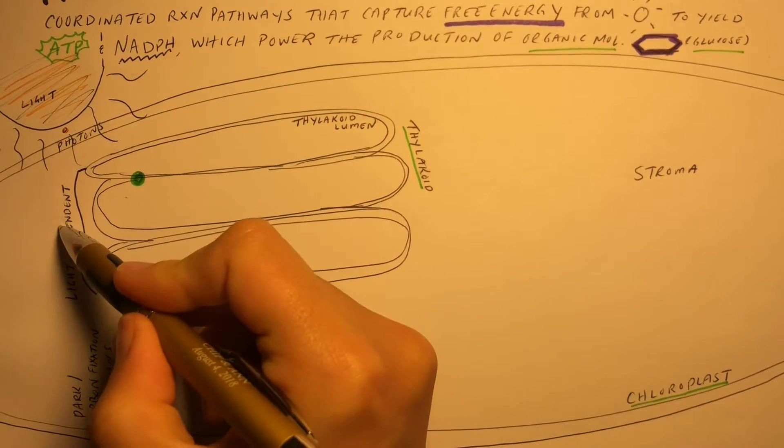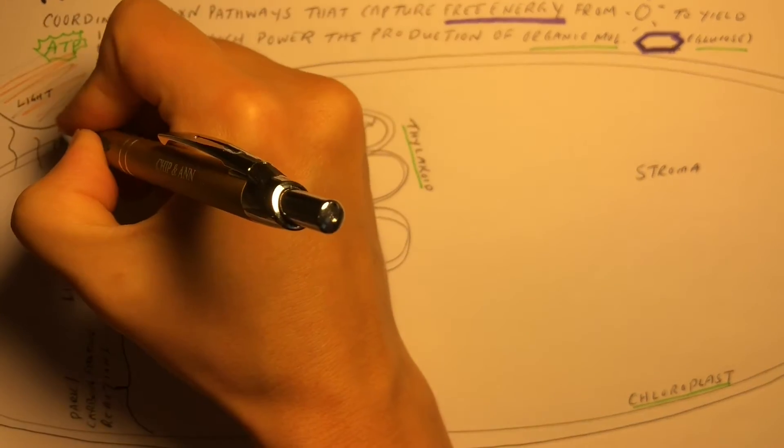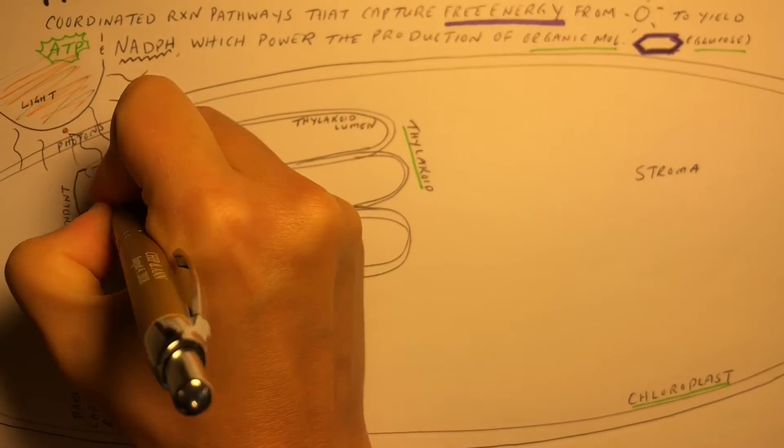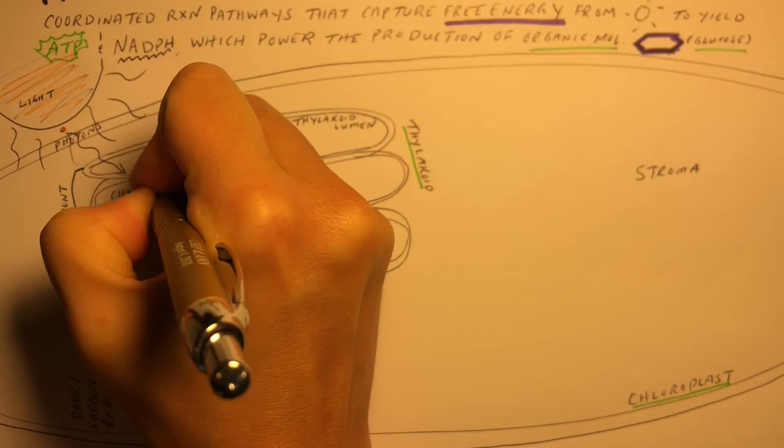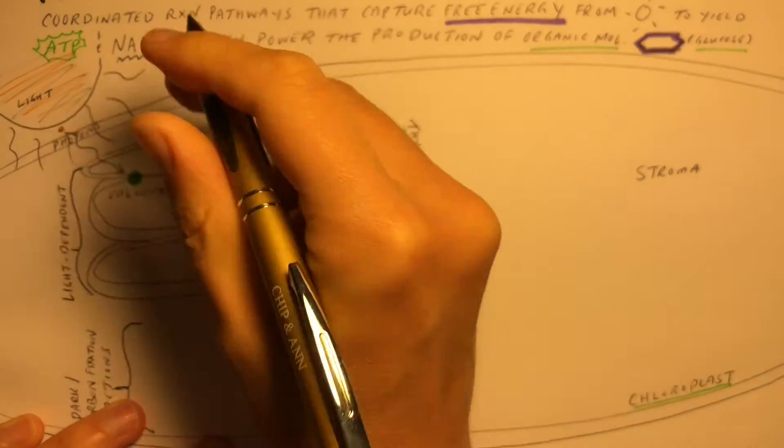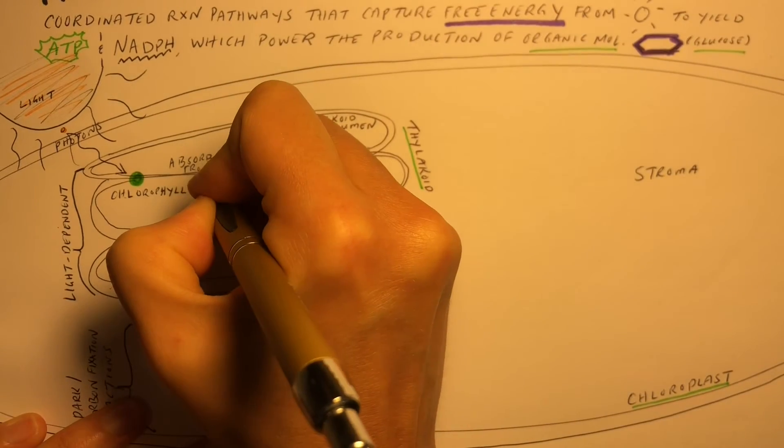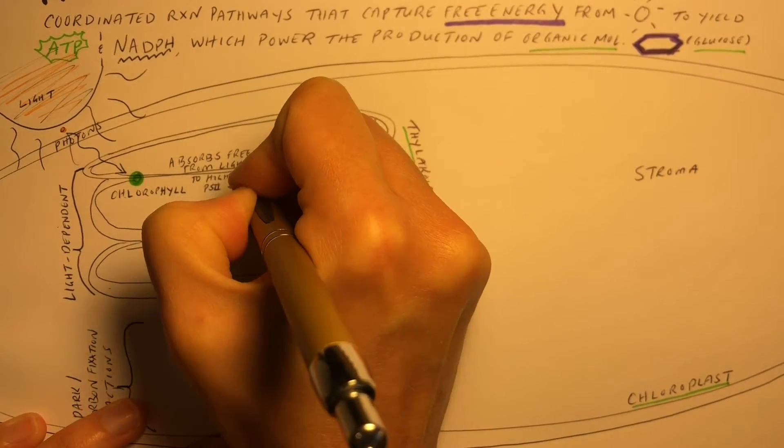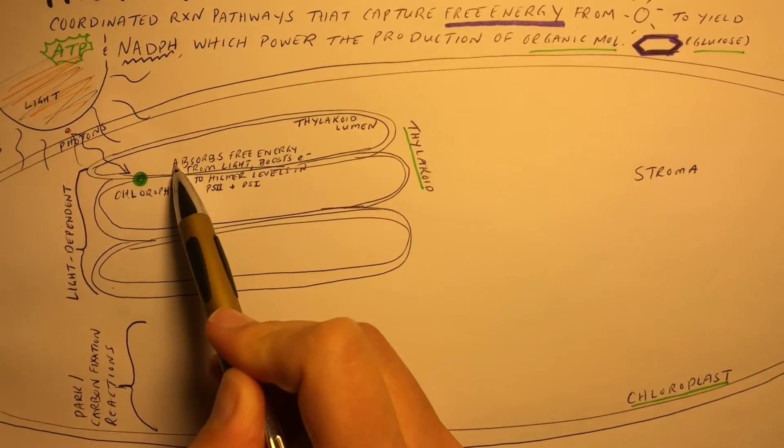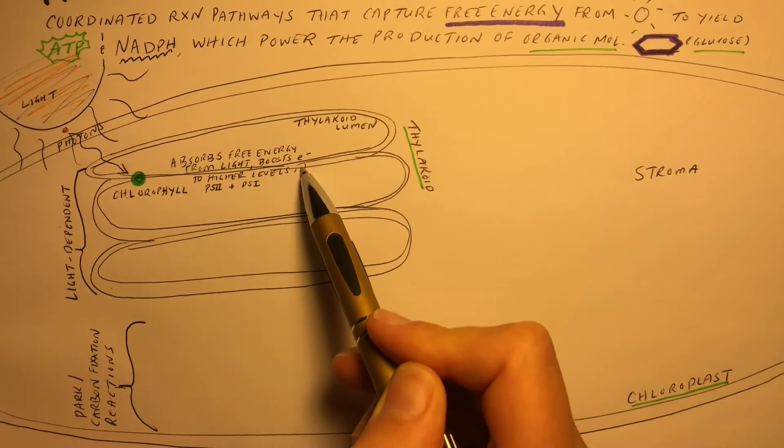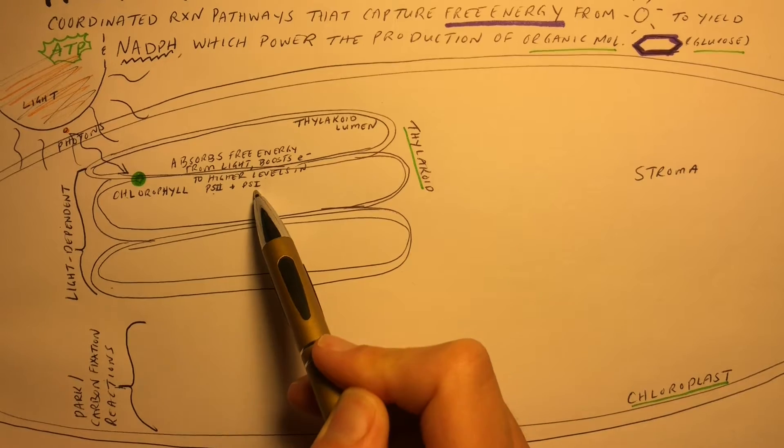Now during the light-dependent reactions, light, which travels as photons, is going to be absorbed in the chlorophyll. The chlorophyll are going to absorb the free energy from the light, which will later boost the electrons to higher levels in photosystems 2 and photosystems 1.